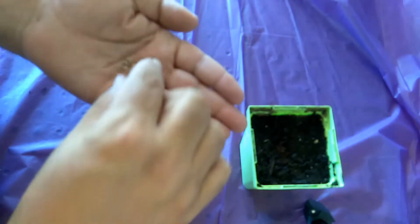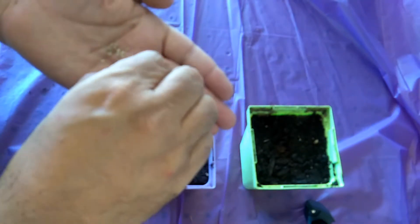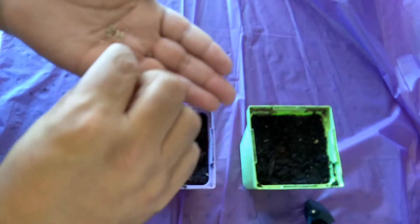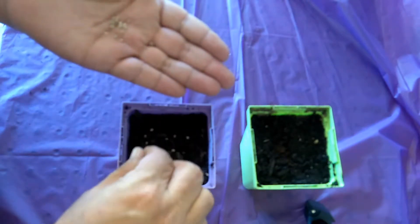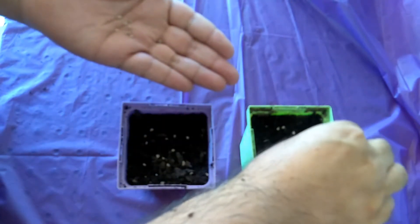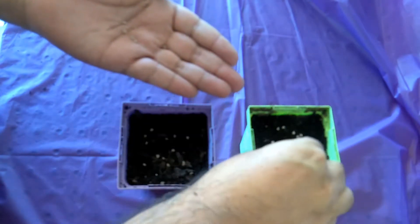So what I do is I just grab a pinch and spread them all over the pot just like that. Now in the second one. And then as they grow and they start getting their two leaves you can actually separate them.